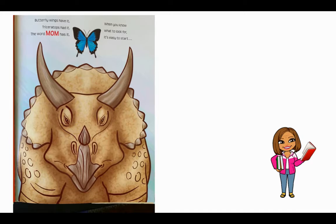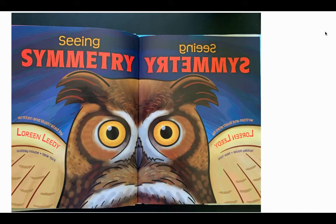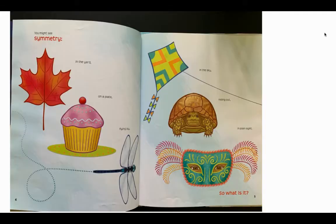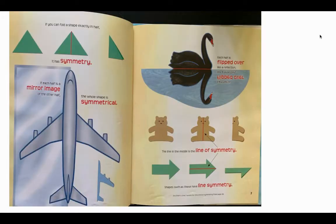Butterfly wings have it. Triceratops had it. The word mom has it. When you know what to look for, it's easy to start seeing symmetry. You might see symmetry in the yard, on a plate, flying by, in the sky, hiding out in plain sight. So what is it? If you can fold a shape exactly in half, it has symmetry. If each half is a mirror image of the other half, the whole shape is symmetrical. Each half is flipped over like a reflection. The line in the middle is the line of symmetry.